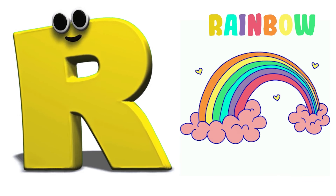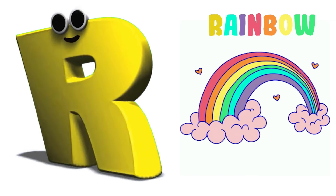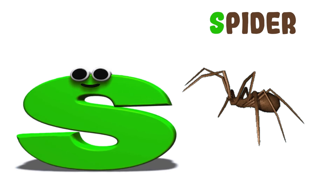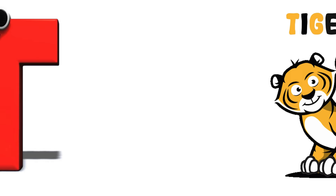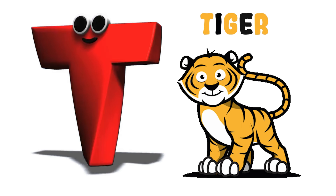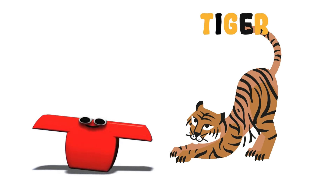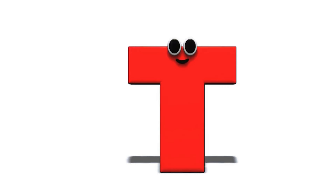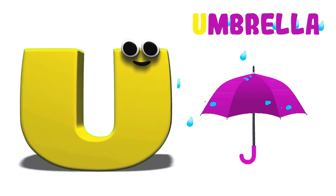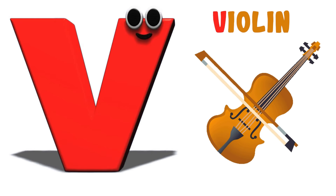R is for Rainbow. R, R, Rainbow. R, R, Rainbow. S is for Spider. S, Spider. S, Spider. S, Spider. T is for Tiger. T, T, Tiger. T, T, Tiger. T, Tiger. U is for Umbrella. U, Umbrella.